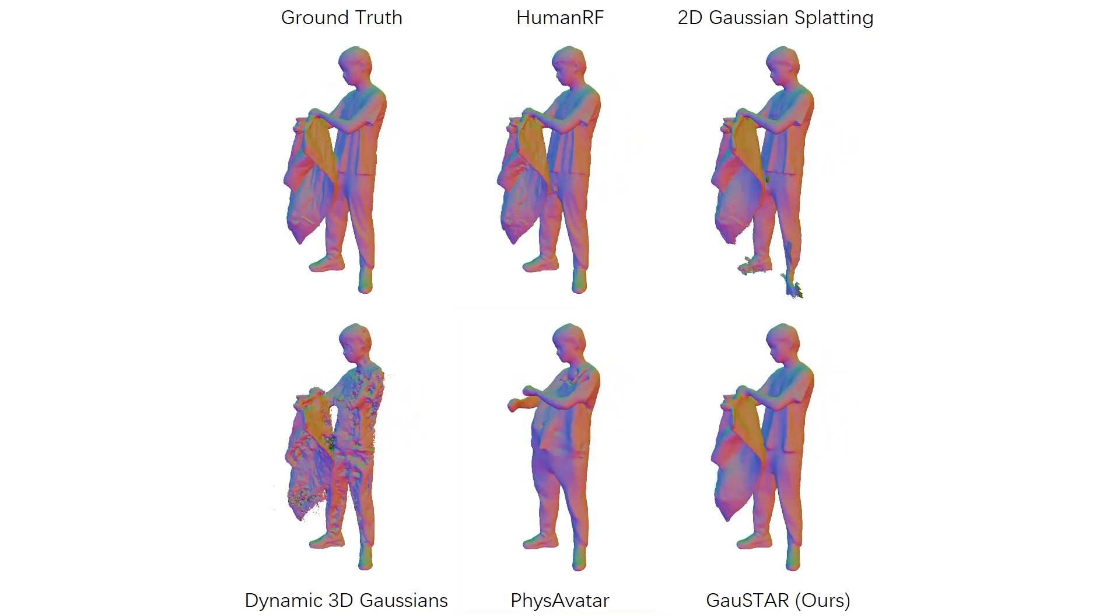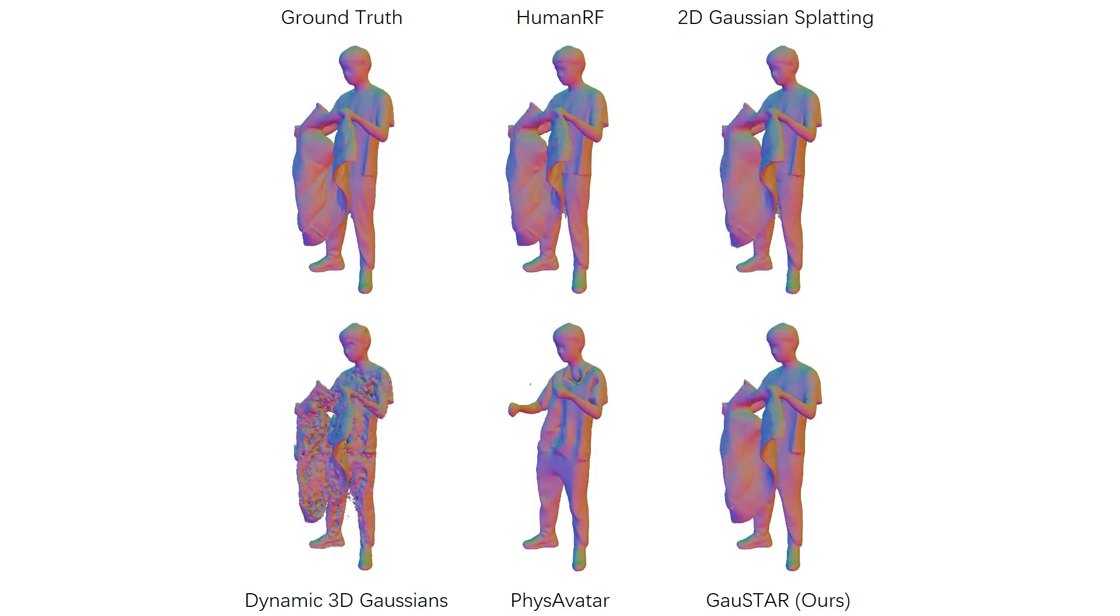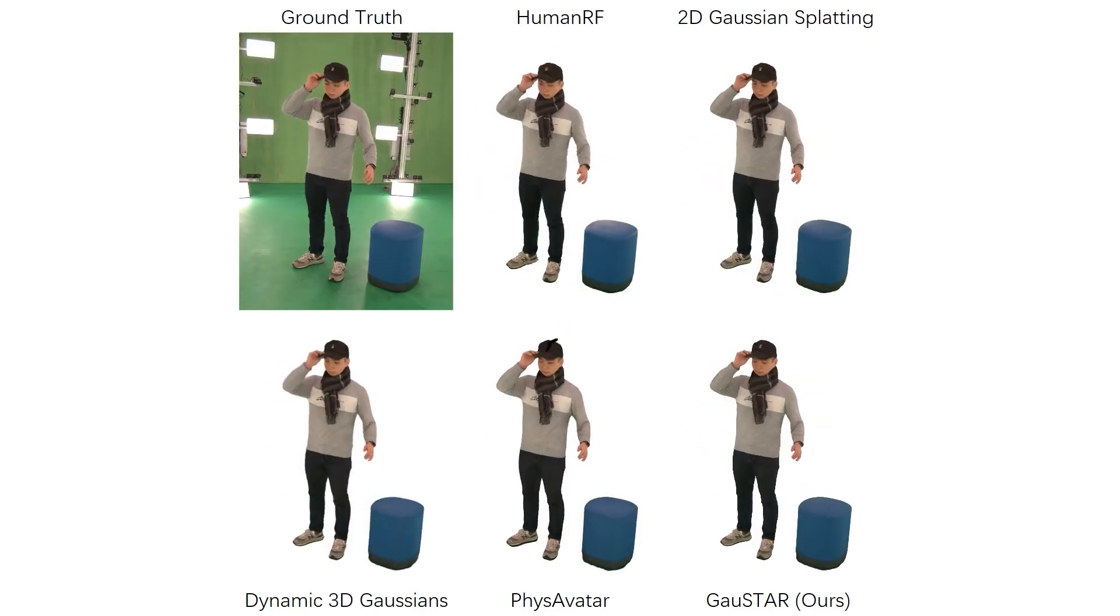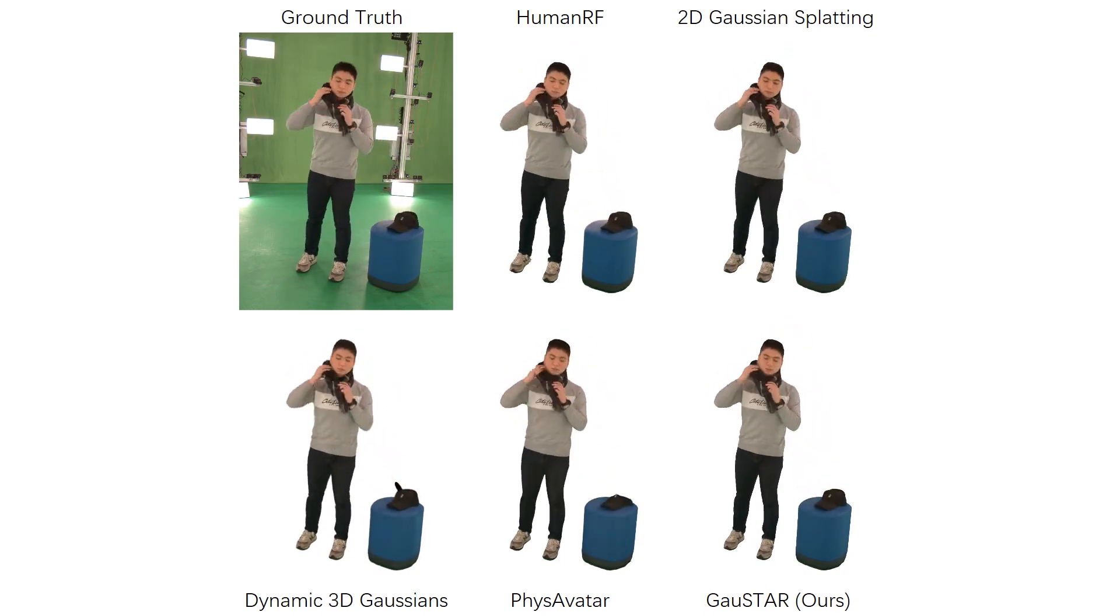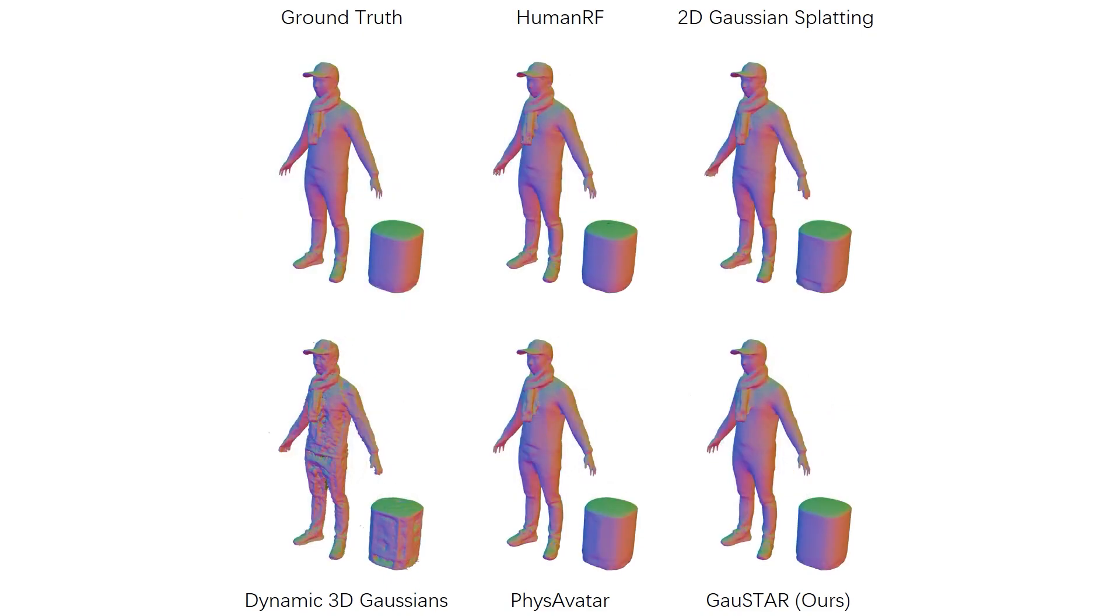PhysAvatar cannot handle topology changes. In contrast, Gaustar achieves both high-quality reconstruction and reliable tracking, while handling topology changes effectively. Please refer to our paper for more comparisons.